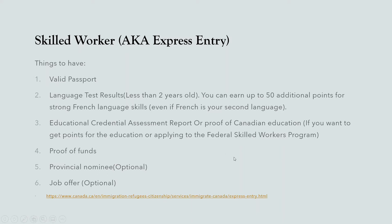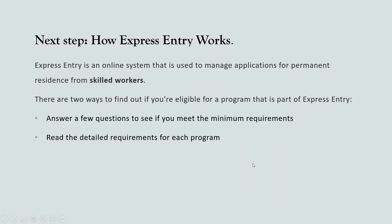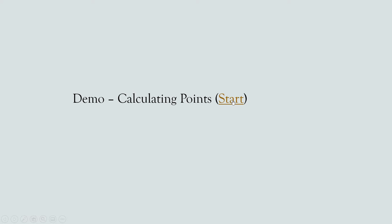If you have a job offer, you would also include that — those last two are optional. The express entry is an online system used to manage applications for permanent residence through the skilled workers program. There are two ways to find out if you're eligible: you can answer a few questions to see if you meet the minimum point requirement, or you can read the detailed requirements for each program. The questionnaire is much easier, so we'll go ahead and do a demo.